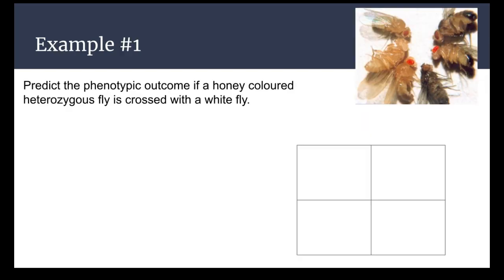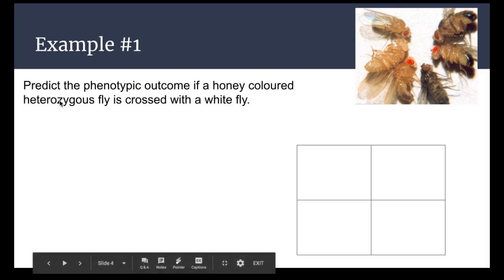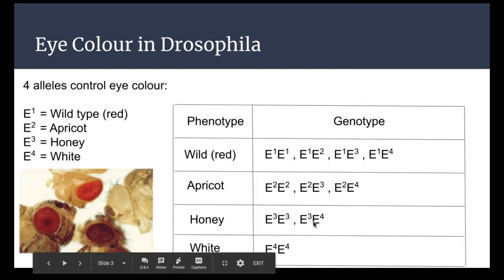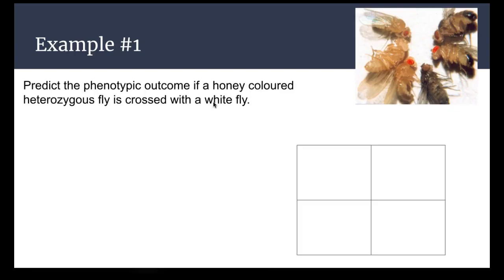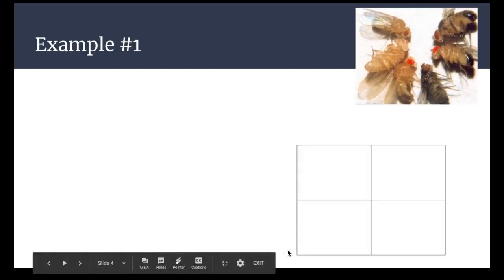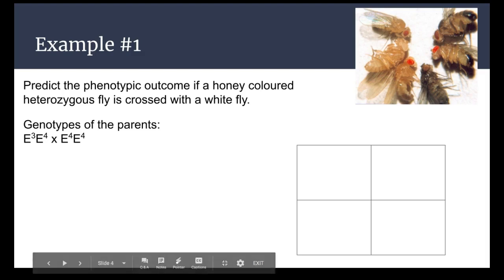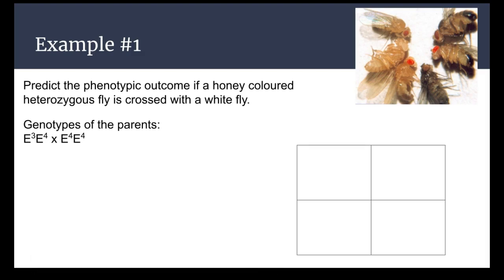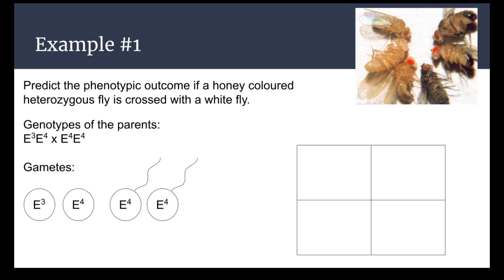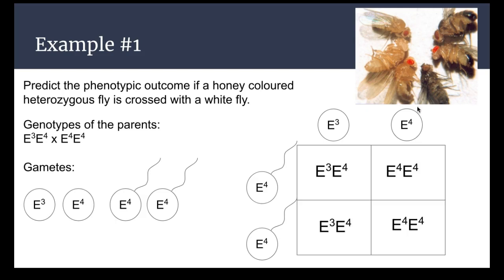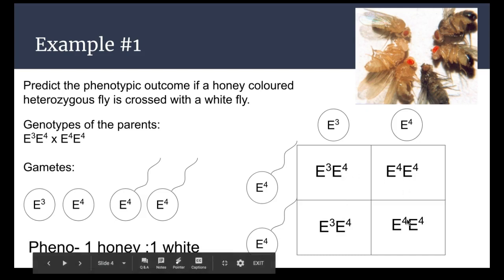For a worked example with Drosophila eyes: if we have a honey-colored heterozygous fly, looking at the previous slide, they would have to be E3/E4, crossed with a white fly, which can only be E4/E4. So the parents are E3/E4 (heterozygous honey) and E4/E4 (white). Separating the gametes — the female produces E3 and E4 eggs, and the male produces only E4 sperm. Putting that into the Punnett square, I end up with two honey and two white offspring — a one-to-one ratio between honey and white.